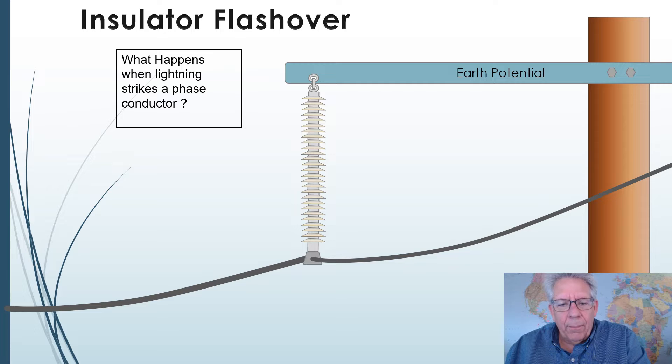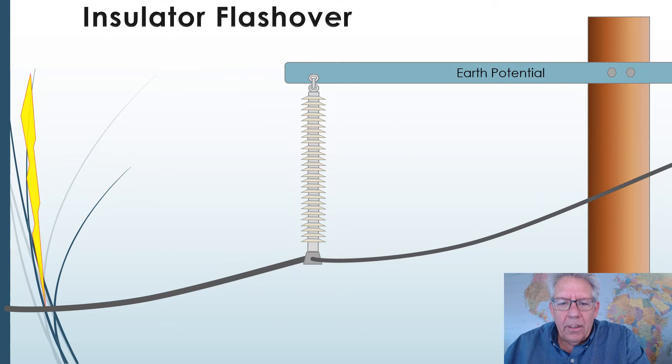When the power system is sitting there waiting, we have a single conductor suspended by an insulator connected to a cross arm, and then the cross arm is connected to a pole that goes down to ground. And when lightning comes along, it strikes the system somewhere up and down the system. We can't tell where it's going to happen.